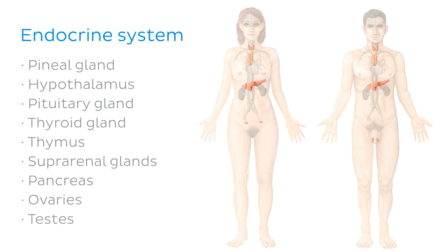Keep in mind that although the endocrine glands secrete the hormones they produce into the bloodstream, the thyroid gland stores its hormone extracellularly as an inactive precursor molecule. So now that I've given you a quick overview of what we're going to talk about today, let's get started.